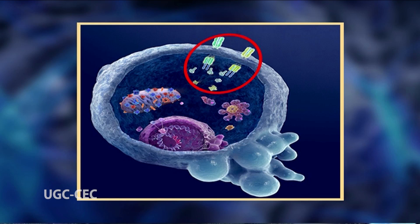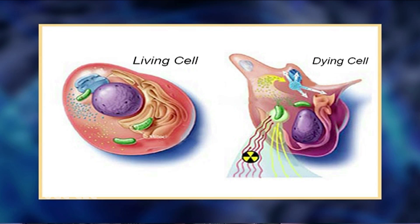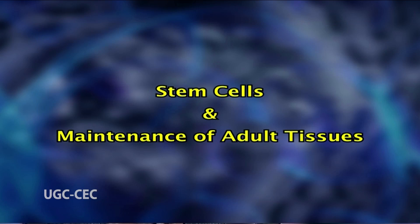The extrinsic (receptor-mediated) and intrinsic (mitochondrial-mediated) pathways ultimately converge by activating the same executioner caspases, which cleave the same cellular targets. As cells execute the apoptotic program, they lose contact with neighbors and start to shrink. Finally, the cells disintegrate into condensed membrane-enclosed apoptotic bodies. The entire apoptotic program can be executed in less than an hour.